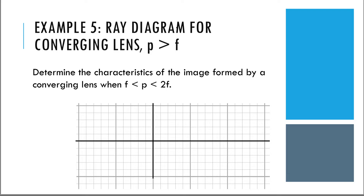How do we know if the image is going to be smaller or larger? Let's find the characteristics of an image formed when the object distance p is greater than the focal length f but less than two times the focal length — so f < p < 2f. We have our lens as this vertical line with the little lines to show a converging lens, and we put focal points on each side. Let's draw the three rays to find the image.